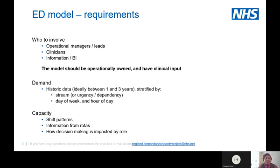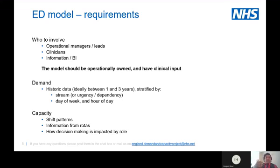On the data side, for your demand we need historic data, ideally between one and three years, stratified by the acuity, urgency, or dependency of your patients and by day of week and hour of day. This is data which is routinely held and readily available, as it is the same data that EDC traps require. On the capacity side, we require shift patterns — when your shifts run from and to — and information from rotas, along with information about how decision making is impacted by the decision maker role.